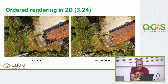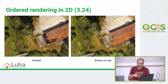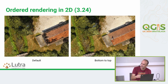Back in 3.24, we implemented ordered rendering in the 2D views. Because of the nature of tiled point clouds, it's often the case that points with a higher elevation are not always rendered on top of points with lower elevation. So we implemented an ordered rendering where points are sorted before being rendered and you can actually see the roof instead of the floor, like in this example.